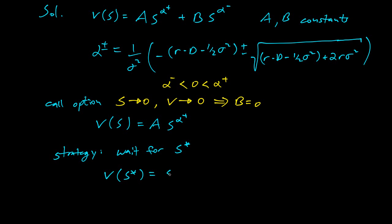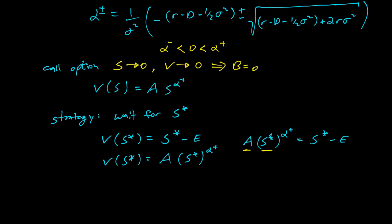And so the payoff at S star, what's the payoff? It'll be the price minus the strike price. That'll be my payoff. And then from this equation up here, we also have V of S star is A S star to the alpha plus. And so these are equal, so we know these have to be the same. So we can say that A S star to the alpha plus equals S star minus E. But we have one equation, and we have two unknowns. We don't know A, and we don't know S star. So we need more.